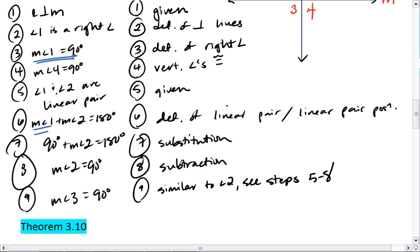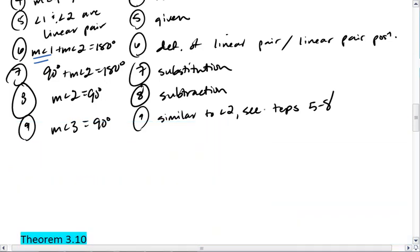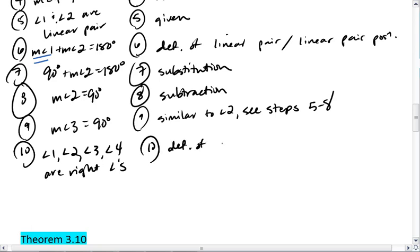So finally, since we've shown that all 4 angles equal 90 degrees, we can say that angle 1, angle 2, angle 3, and angle 4 are right angles. And that's by the definition of right angles.